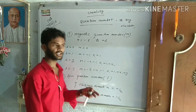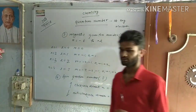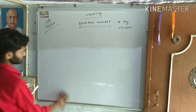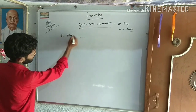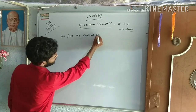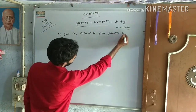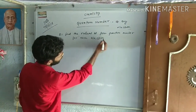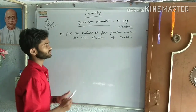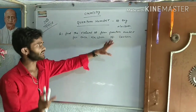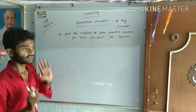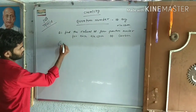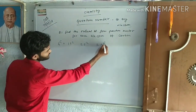Now we will discuss the question. Question: Find the values of four quantum numbers for each electron of carbon. Carbon के जितने भी electrons हैं, प्रत्येक electron के लिए चारों quantum numbers के मान find करने हैं।